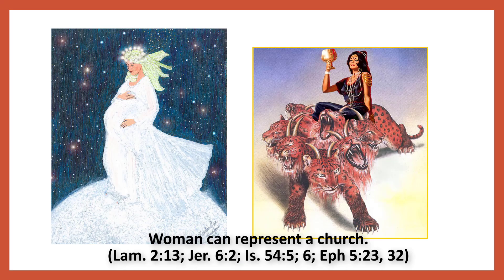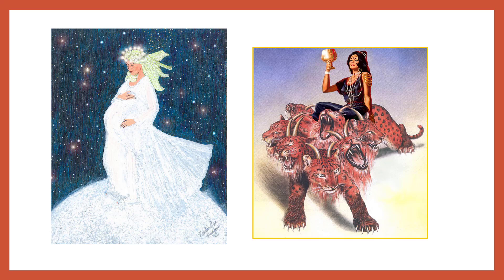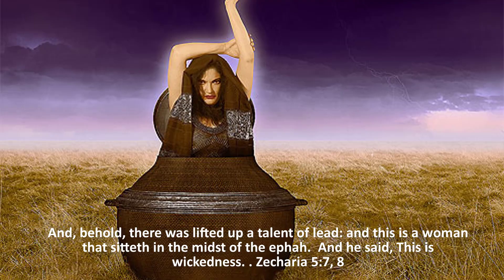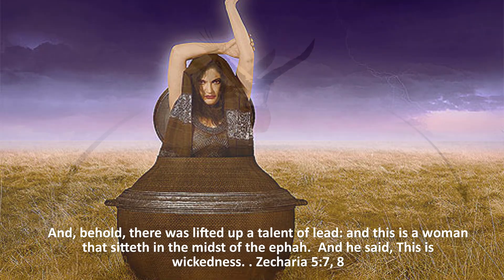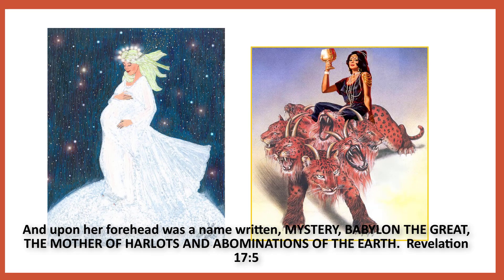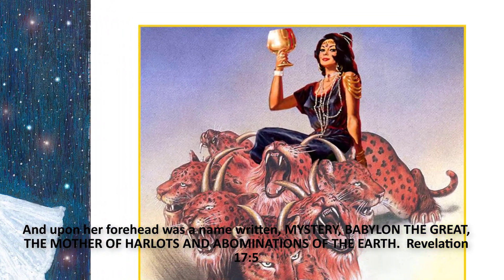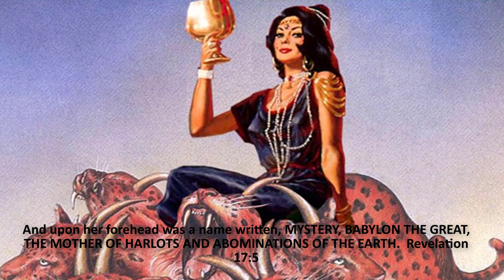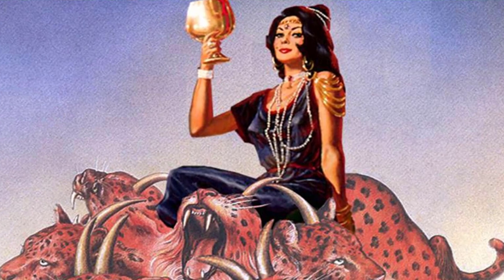You can pause the video and look up these texts to see that in the Bible a woman can represent a church. The Bible says these are wicked women — a wicked church. "And behold there was lifted up a talent of lead, and this is a woman that sitteth in the midst of the ephah. And he said, this is wickedness." Shinar is the place where the rebellious people after the flood built the tower of Babel — a plain in Babylon — and Babylon represents a place of wickedness. "And upon her forehead was the name written: Mystery of Babylon the Great, the mother of harlots, and the abominations of the earth."